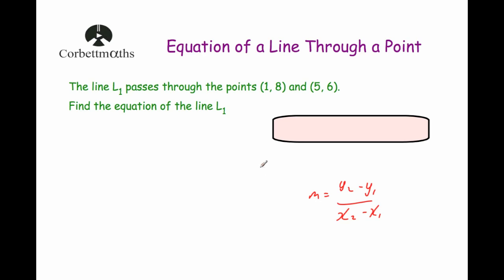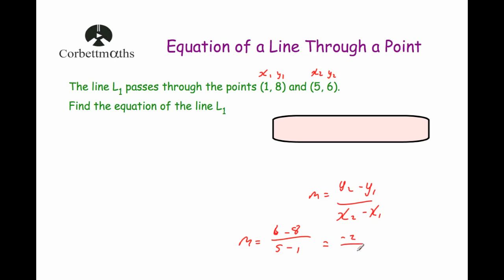We can work out the gradient and then, once we've found that, we can use one of the points in the formula. So let's label the points x1, y1, and x2, y2, and substitute them in to get the gradient. So m equals y2, which is 6, minus y1, which is 8, over x2, which is 5, minus x1, which is 1. Simplifying: 6 minus 8 is minus 2, over 5 minus 1 is 4. And minus 2 divided by 4 is minus one half. So the gradient is minus one half.